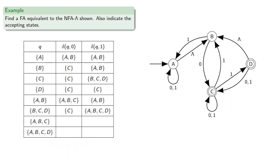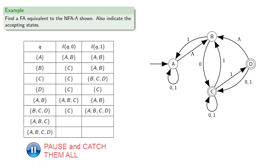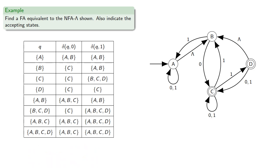If you're at {A, B, C} or {A, B, C, D}, then a 0 or 1 will take you to the appropriate sets. So now, if our set of states is this full list of subsets, this is a transition function for a finite automaton.